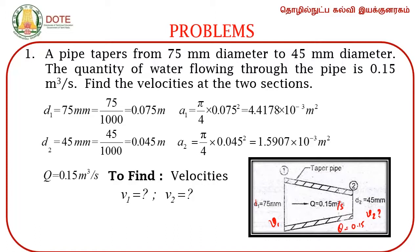D1 = 75 mm = 0.075 meters. The pipe is of circular cross section, so area A1 = (π/4) × (0.075)² = 4.41 × 10⁻³ m². Similarly, D2 = 45 mm = 0.045 meters. Area A2 = (π/4) × (0.045)² = 1.59 × 10⁻³ m². The discharge given is 0.015 m³/s. We need to find inlet velocity V1 and outlet velocity V2.